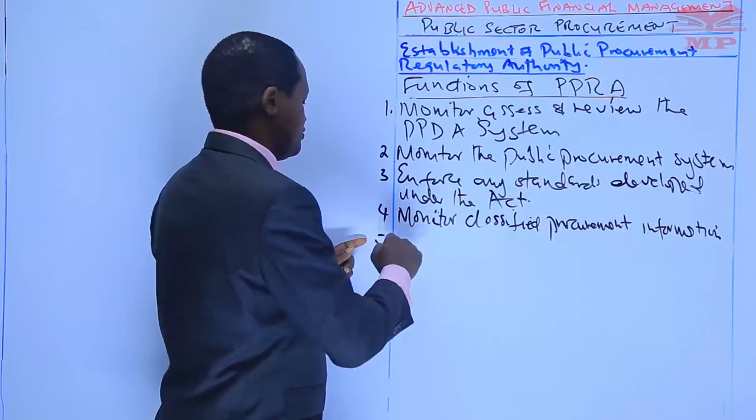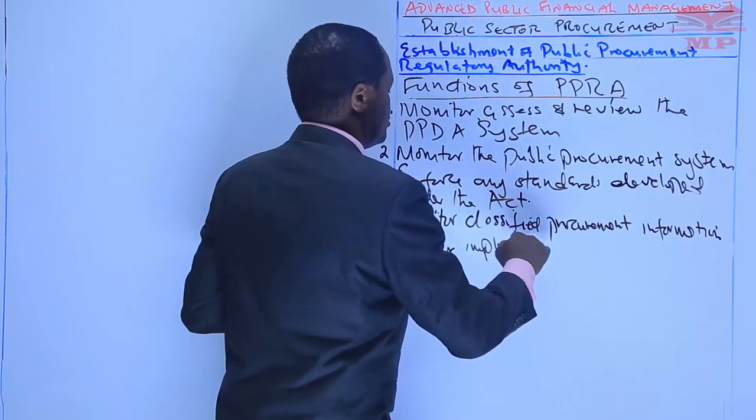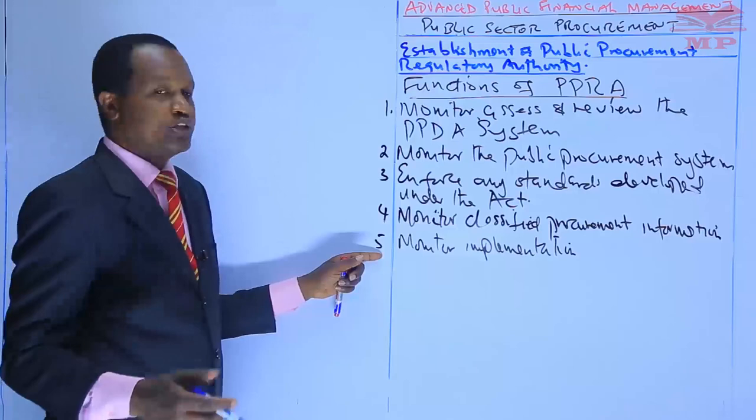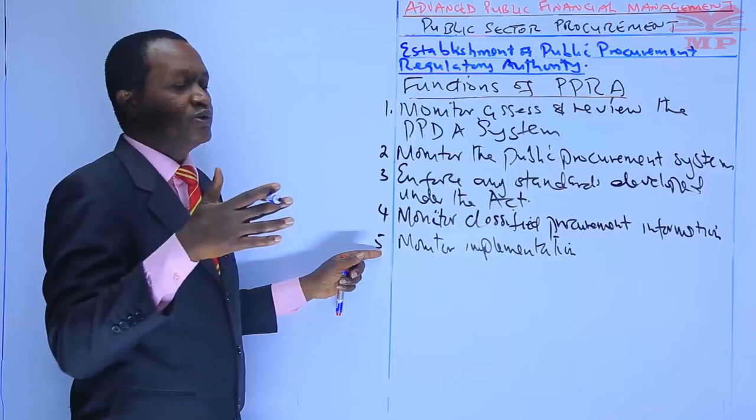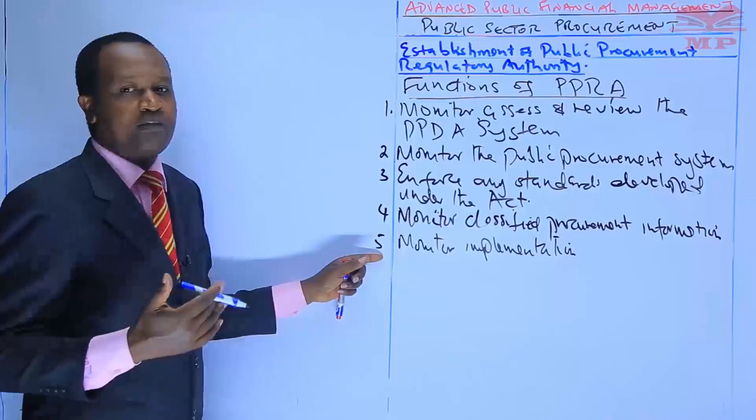Function five is to monitor the implementation of the preference and reservation schemes by procuring entities.